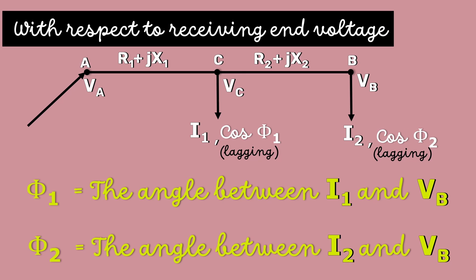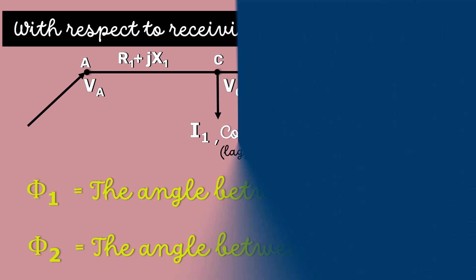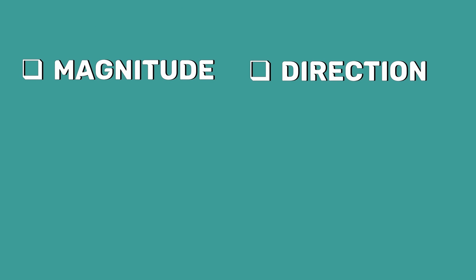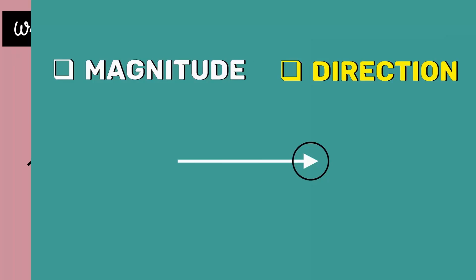Now, let's represent these I1, I2 and VB in vector diagram. Let's take VB as a reference vector. A vector has a magnitude and direction. It's simply represented by an arrow. Here, the length represents the magnitude and the arrow head represents the direction.